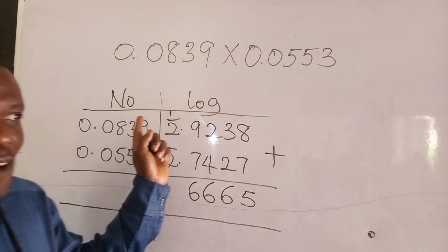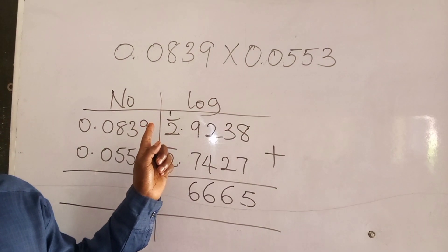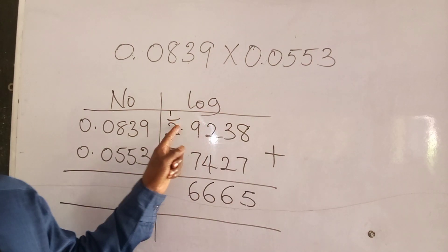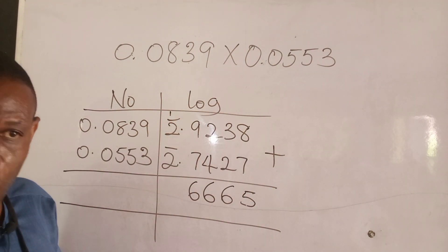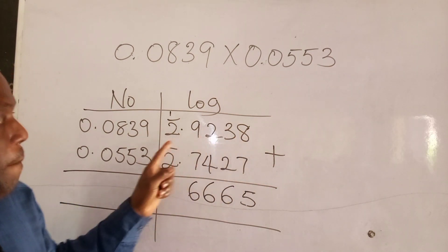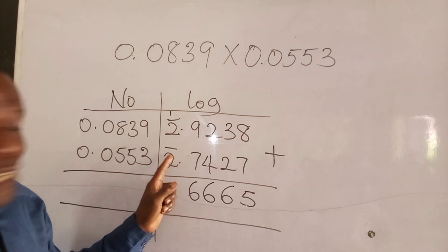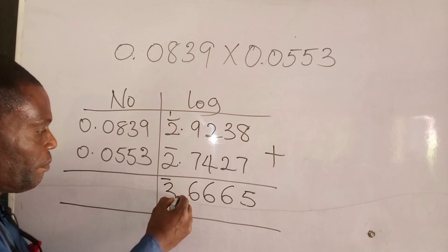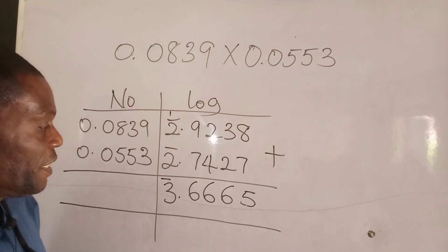Now you have to be careful every time you have this. You have to be careful. 1 plus minus 2 is minus 1, plus minus 2 is what? What is the value? Minus 3 or 3 bar.